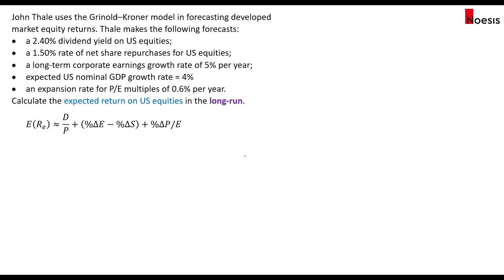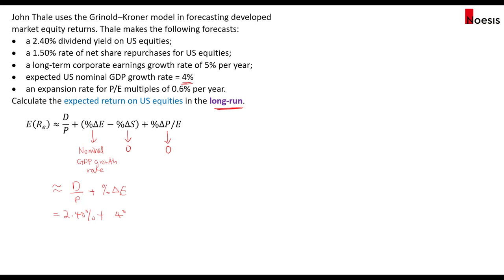Lastly, if you are asked to calculate the expected return on U.S. equities in the long run, note that in the long run we assume the percentage change in shares outstanding will approach 0, there will be no change in the PE multiple, and the percentage change in corporate earnings growth rate should approximate the nominal GDP growth rate of the economy, which in this case is 4%. So this will be approximately equals to D over P plus the nominal GDP growth rate, which is 2.4% plus 4%, giving us a 6.4% expected return on U.S. equities in the long run.